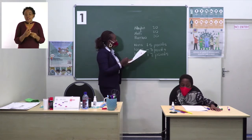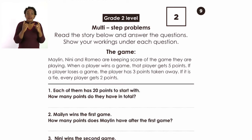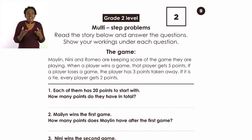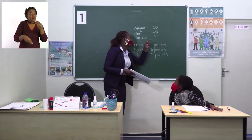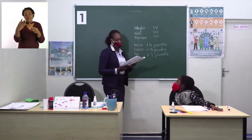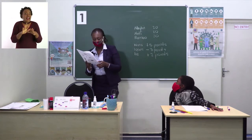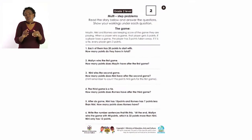Let's now check number two. Marilyn wins the first game. How many points does Marilyn have after the first game? We said a win is five points, so Marilyn will get five points. I now want you to do number three, four, five, and six, following what I was doing here. Thank you very much.